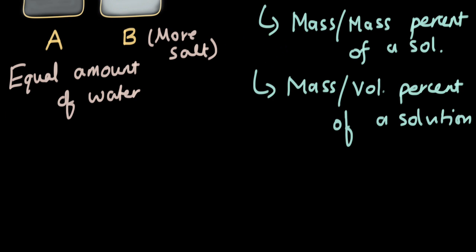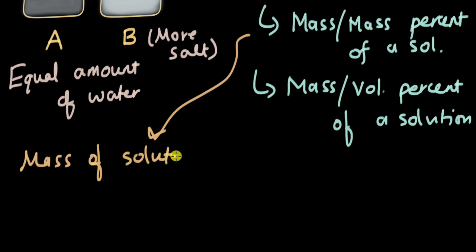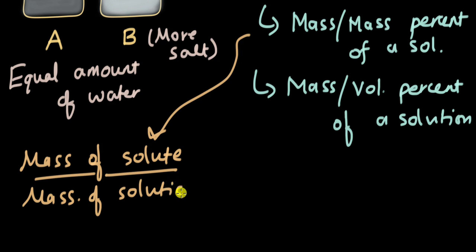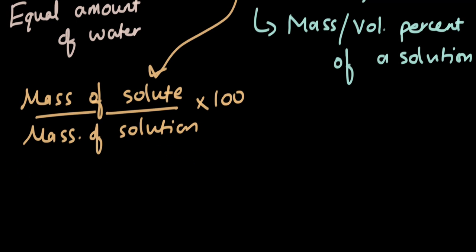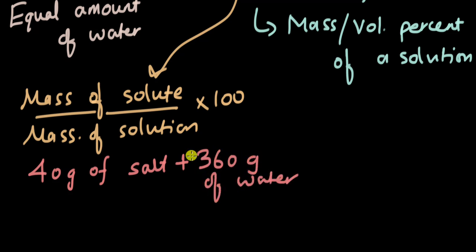For mass by mass percent of a solution, sticking to the salt water example where the solute is salt and the solvent is water, mass by mass percent equals mass of solute divided by mass of solution, multiplied by 100. For example, if we mix 40 grams of salt with 360 grams of water and want to calculate the concentration, the solute is 40 grams divided by 40 plus 360.